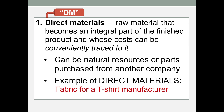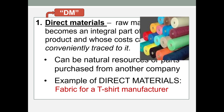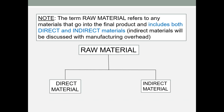For a t-shirt manufacturer, fabric would be an example of a direct material. It is important to note that the term raw material refers to both direct and indirect material. As we move through the course, it is important to distinguish between direct and indirect material.